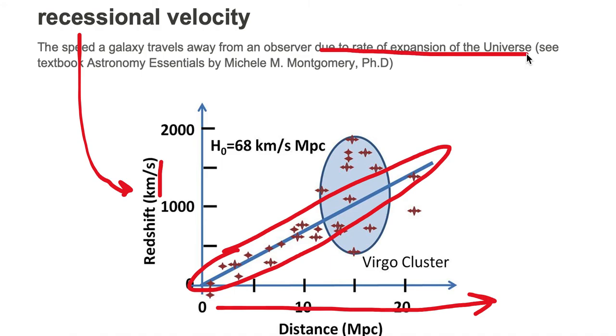The canvas of space is moving outwards away from the observer, carrying the galaxy with it. That is the recessional velocity.